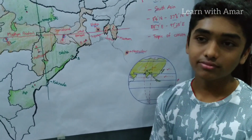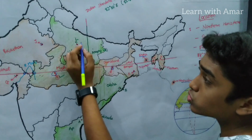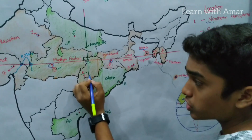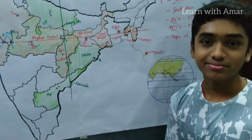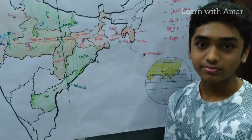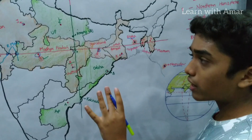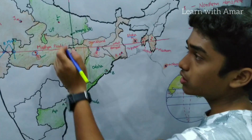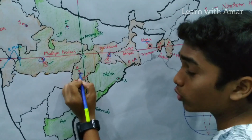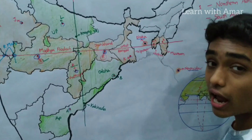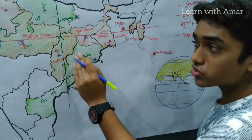How many states are there through which the Indian Standard Meridian runs? The Indian Standard Meridian runs through Uttar Pradesh, Madhya Pradesh, Chhattisgarh, Odisha, and Andhra Pradesh. Among those 5 states, which capital cities lie to the east and which to the west? Out of these 5 capital cities, 4 are situated to the west — Lucknow of Uttar Pradesh, Bhopal of Madhya Pradesh, Raipur of Chhattisgarh, and Amaravati of Andhra Pradesh — and only one, Bhubaneswar of Odisha, is situated to the east of the Indian Standard Meridian.